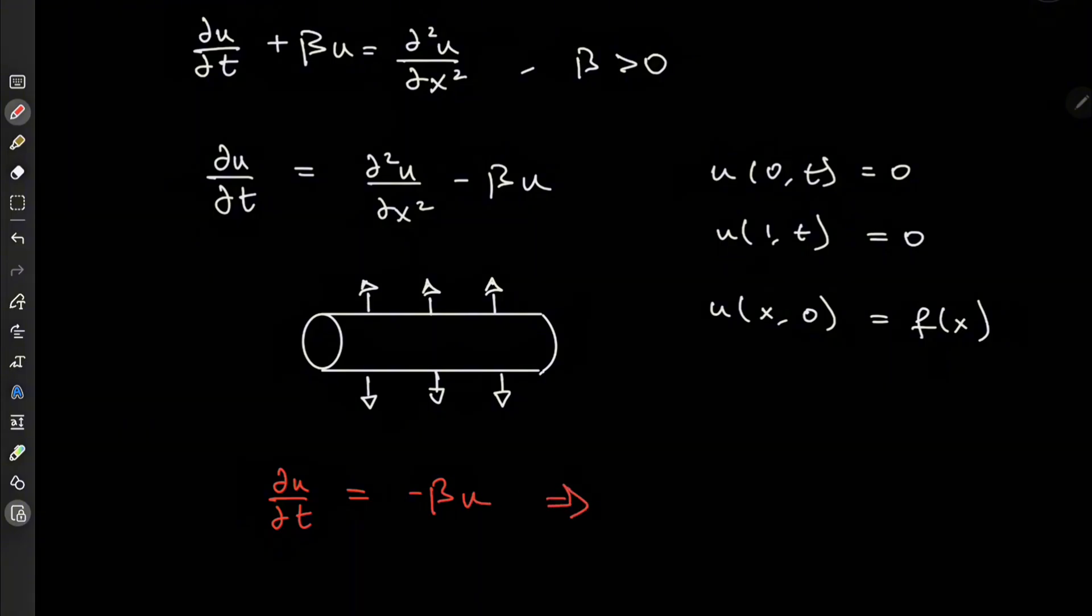So in this case, with no diffusion term, our u of x and t is equal to e to the minus beta times t times some constant A that's actually going to be a function of x.